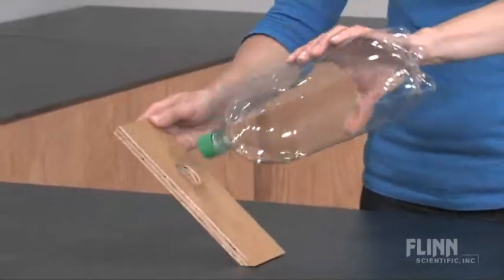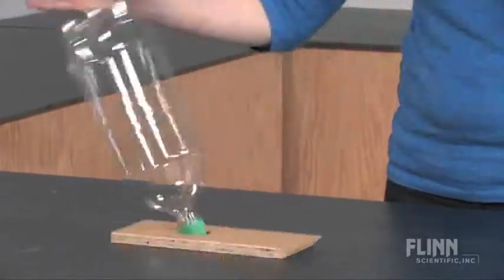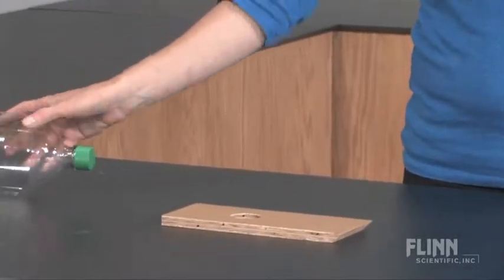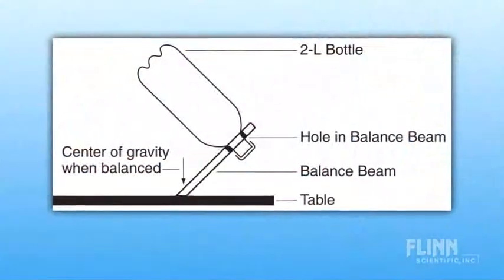When an empty 2-liter bottle is placed on the balance beam apparatus, it doesn't balance and falls forward. This is due to the center of gravity.